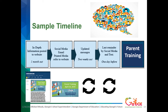I encourage you to set up a timeline at the beginning of the year of how you're going to post on social media. Maybe one month out from an event like a parent training, you could give in-depth information posted on your school website. You could use social media, email, and printed media to refer to the website. You can do an updated message two weeks prior to that parent training, and one day before, send out a last reminder using social media and a text.